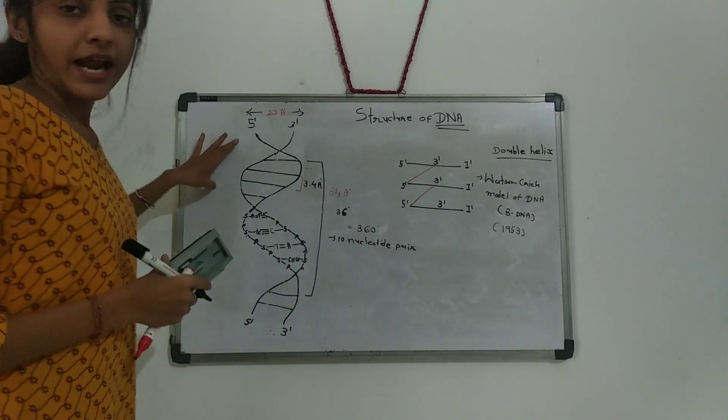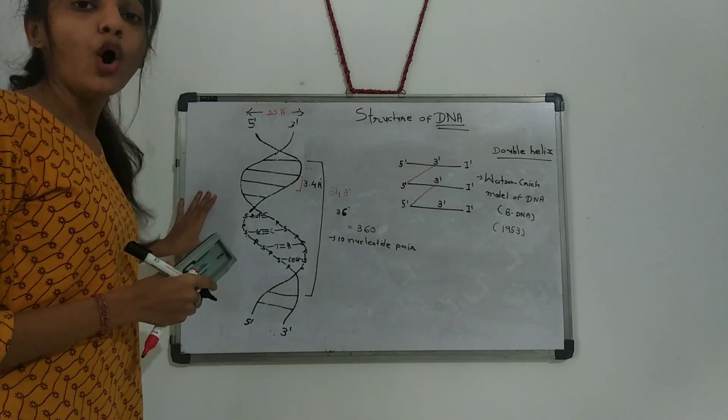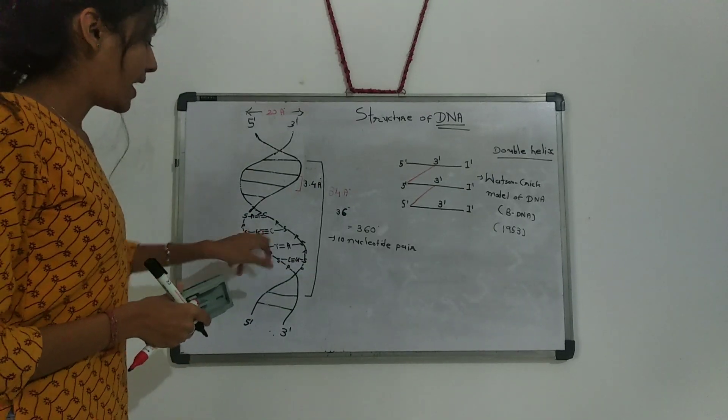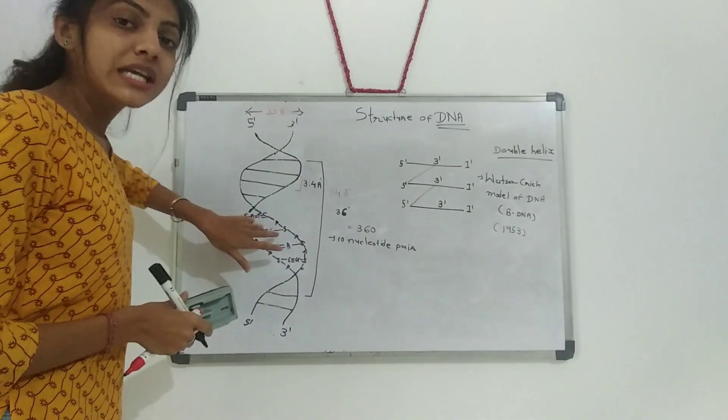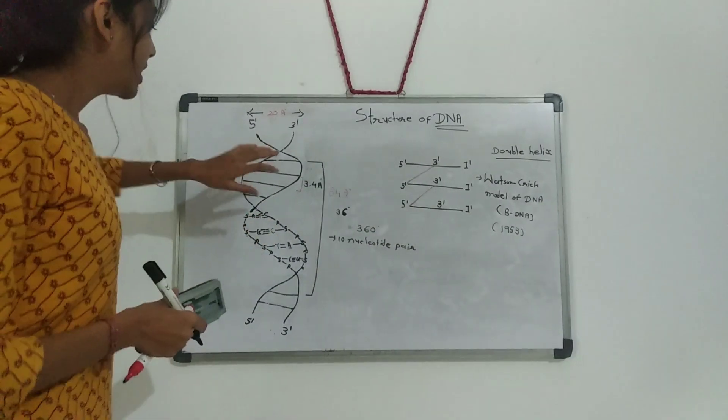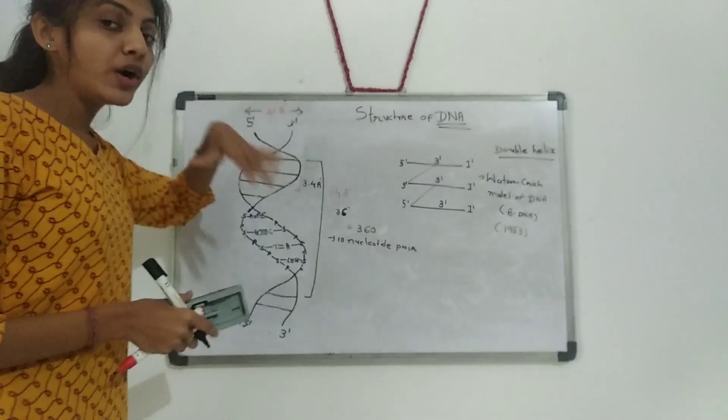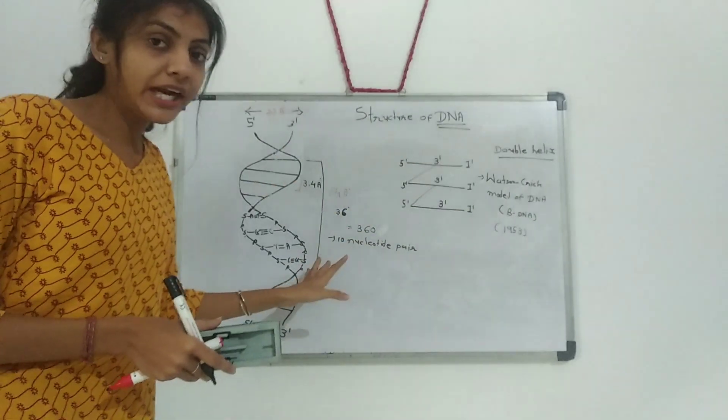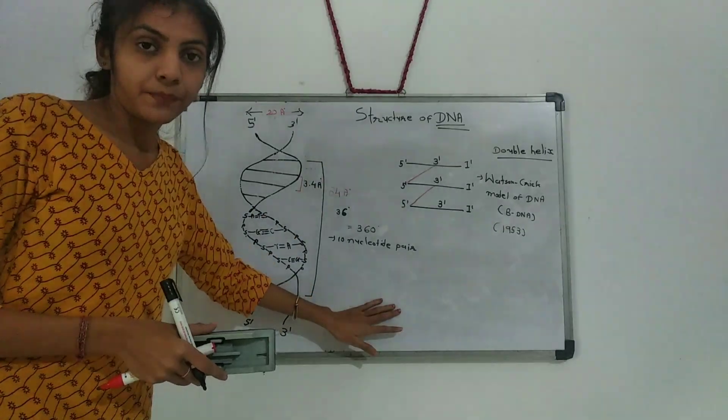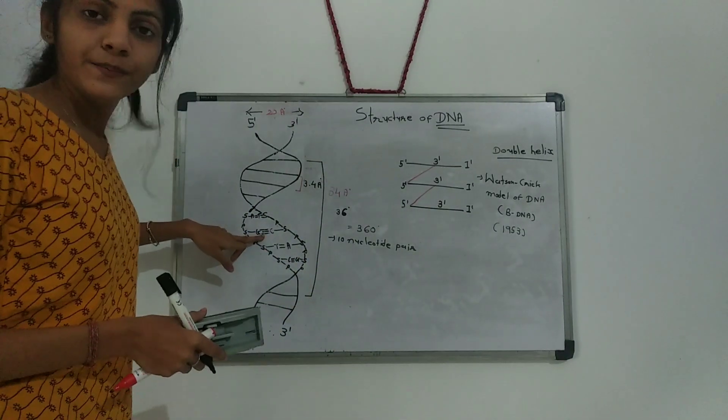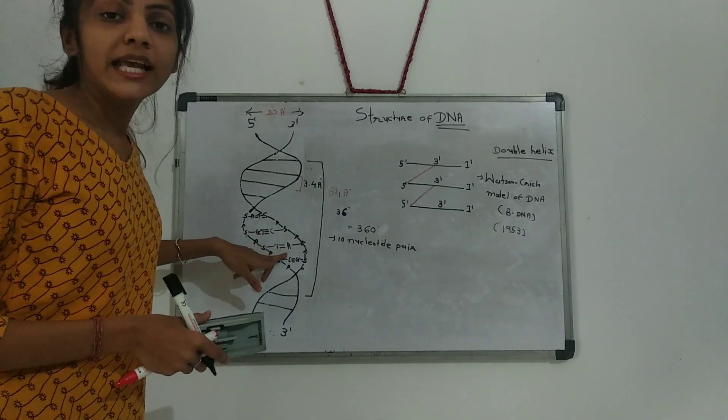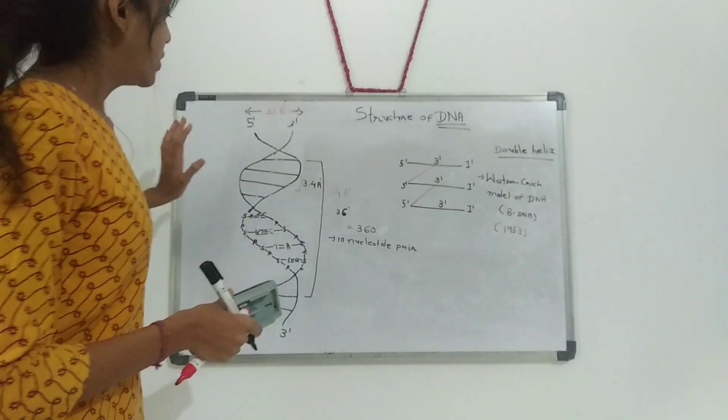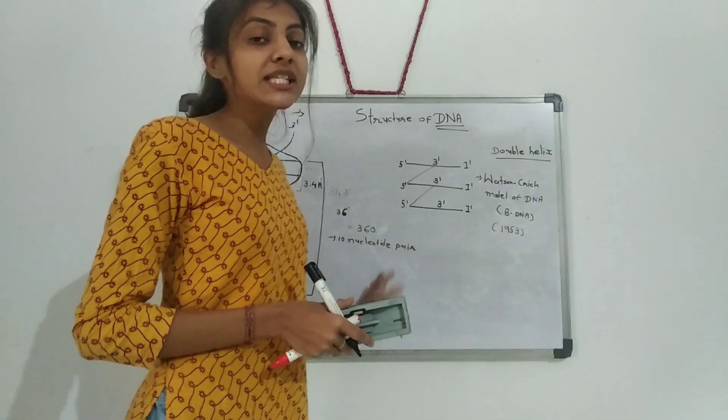Each strand contains hydrophilic deoxyribophosphate backbone outside and hydrophobic bases inside. These two complementary strands are not identical to each other. They are complementary to each other due to this base pairing. The base pairs are connected to each other by hydrogen bonds.